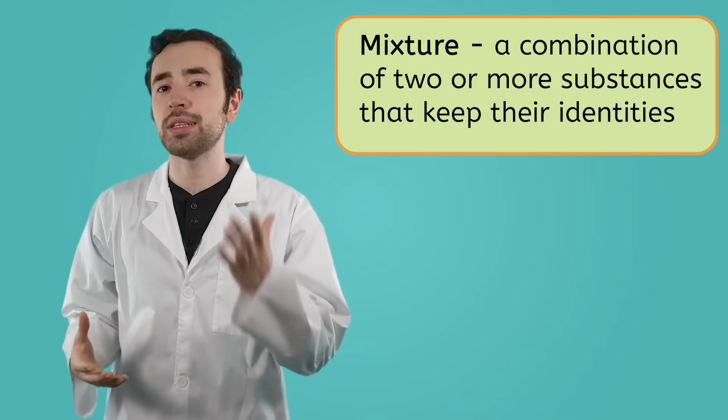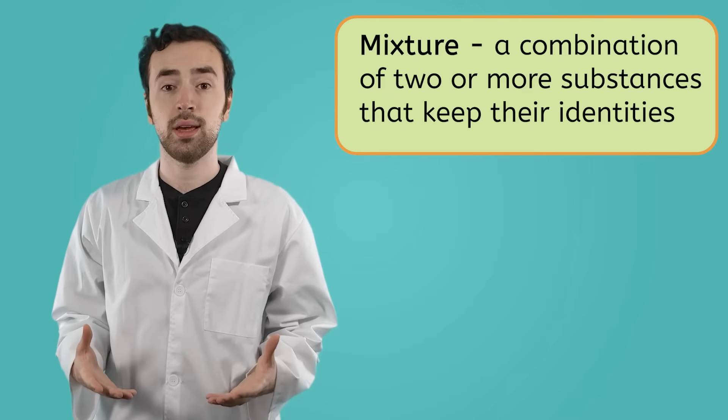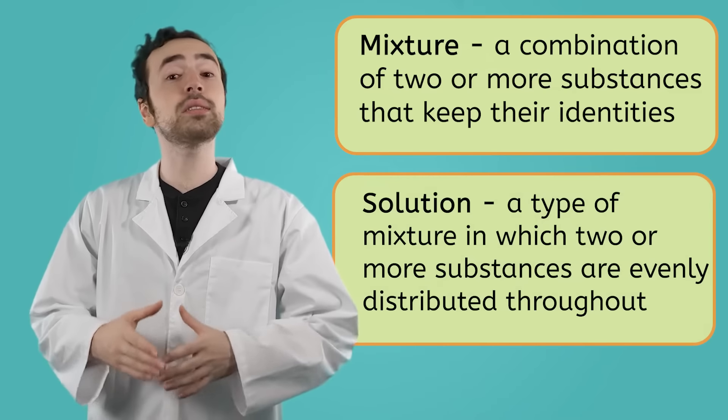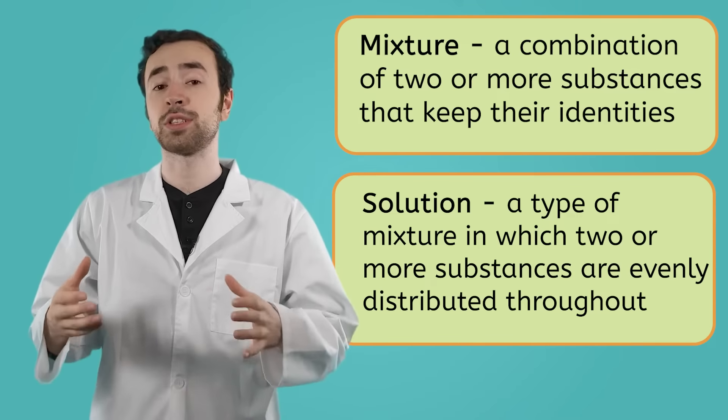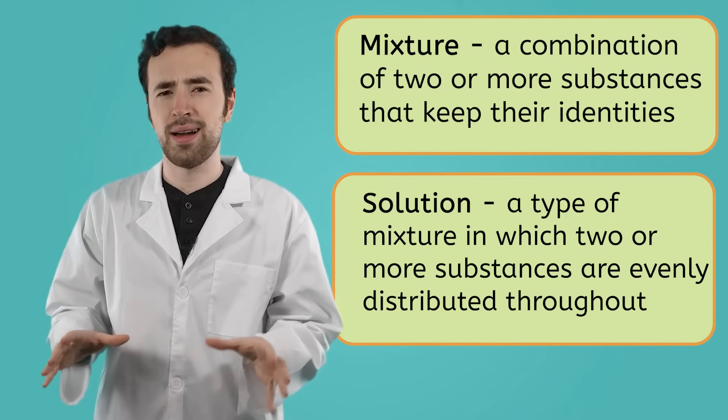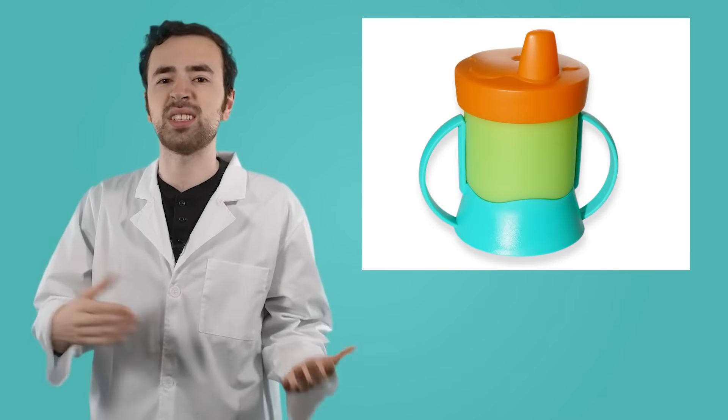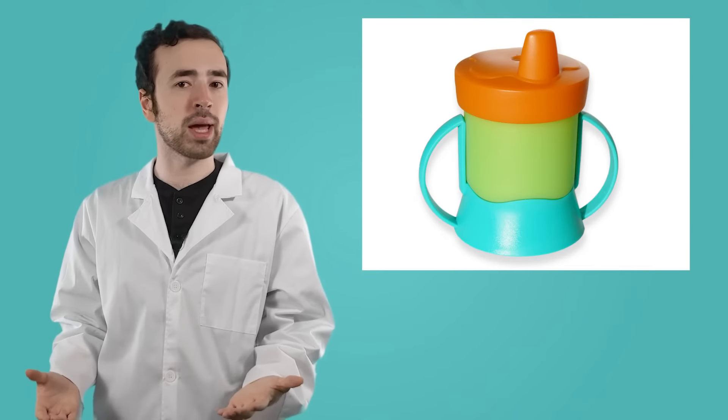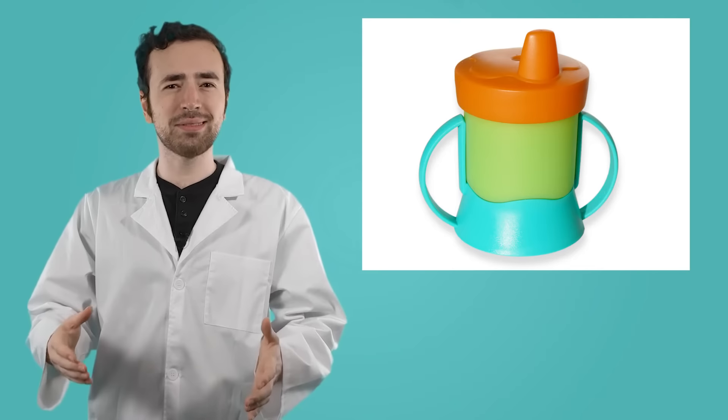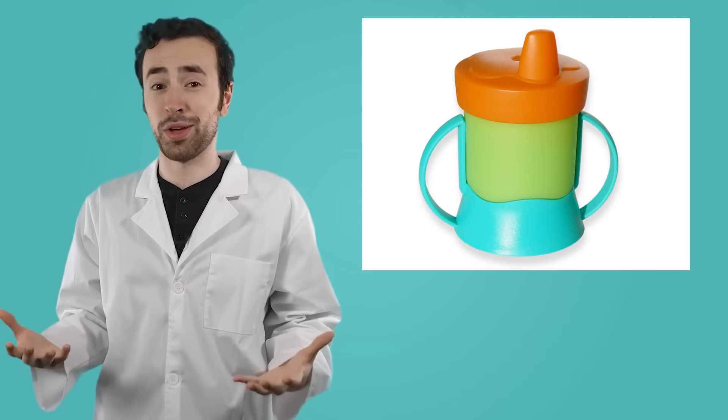So a mixture is a combination of different substances that each keep their identities. And a solution is a mixture in which the different substances are evenly distributed throughout it. But what happens when we don't want the mixture to be a mixture anymore? Like with that sandy, salty, sippy cup full of water that my sister made. Can I even separate out all the different substances to bring them back to the way they were before?